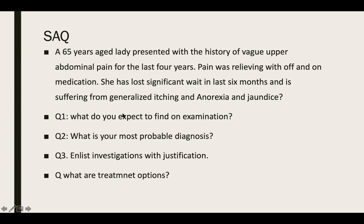In this case, which system is involved? The system is the gastrointestinal tract, and among the GIT, the hepatobiliary system is mainly involved. Pain is in the upper abdominal region and there is jaundice, so it means that the hepatobiliary system is involved.